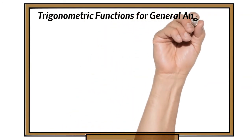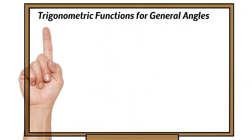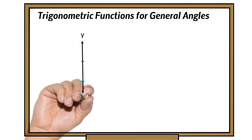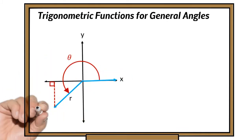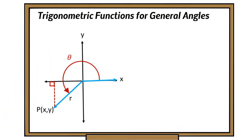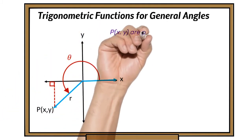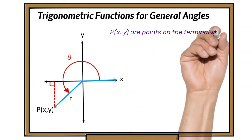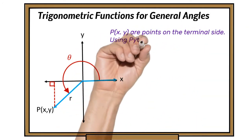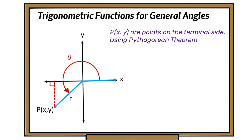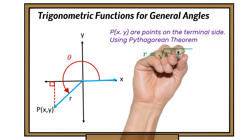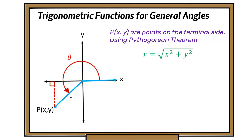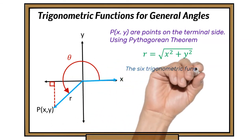Trigonometric functions for general angles. We're going to use Pythagoras theorem, using points with x and y on the terminal side. We can rearrange the formula so that r is the square root of x squared plus y squared.